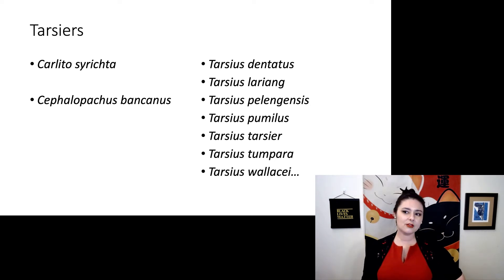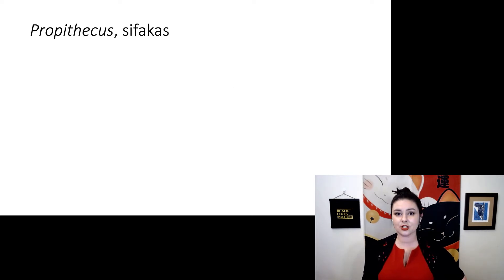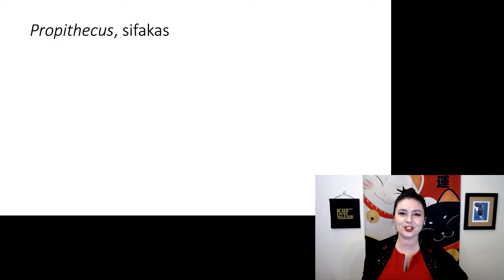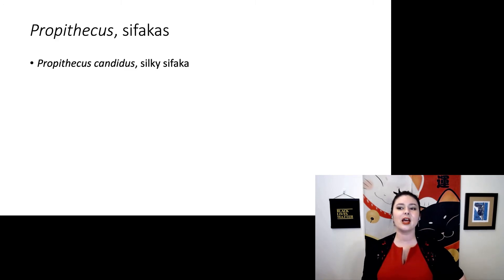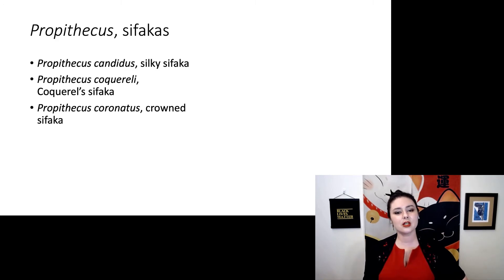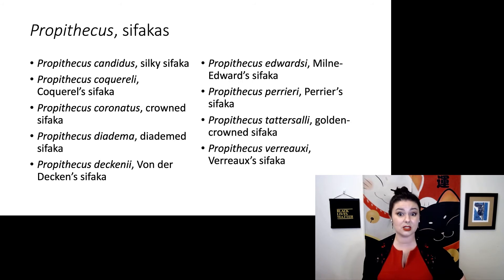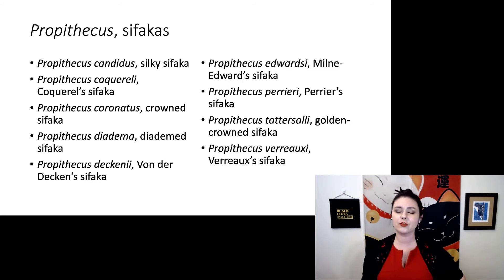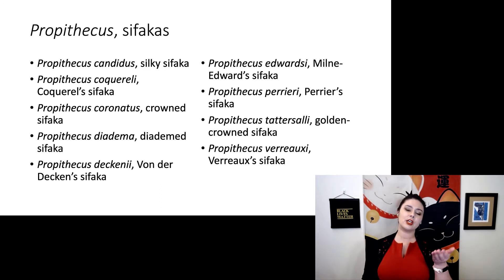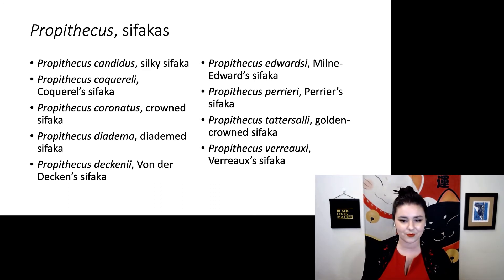Now let's look at Propithecus. These are sifakas — large lemurs that live in Madagascar. And even when we're talking about these, there are a lot of species within genus Propithecus. So make sure that if you are looking for a specific species, you're looking for something with these two names.